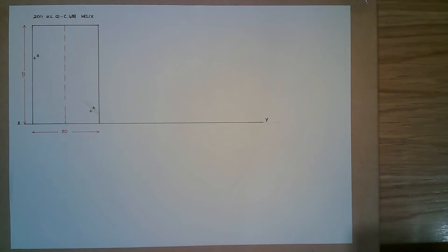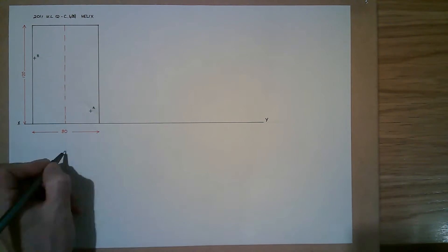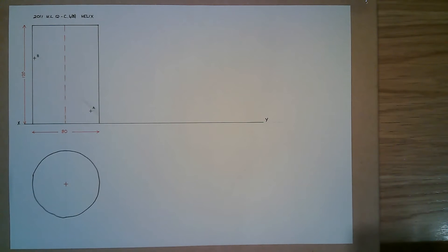The first part is you're asked to draw the given elevation, which I've already done just to speed things up, and you're asked to project a plan of that cylinder. So I'm going to start off by projecting that plan and then we'll take it from there and look at part two. There's my plan projected of this cylinder as you see it now.